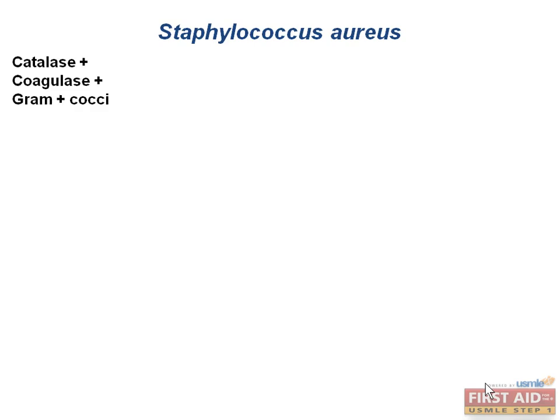Staph aureus is our coagulase and catalase positive gram positive cocci. Remember that staph aureus has protein A. Protein A binds to IgG and prevents activation of complement, causing decreased production of C3B. This is used in opsonization.